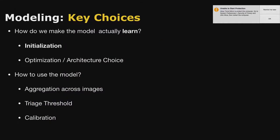The core challenge across all these tasks is how do we make this model actually learn? Our signal-to-noise ratio is quite low, so training ends up being quite unstable. There are a few levers we can play with. The first lever is initialization - often ImageNet initialization. Next, we'll talk about optimization and architecture choices and how this compares to what people often do in the community. And finally, something more explicit for the triage idea in terms of how we actually use the model once it's trained.